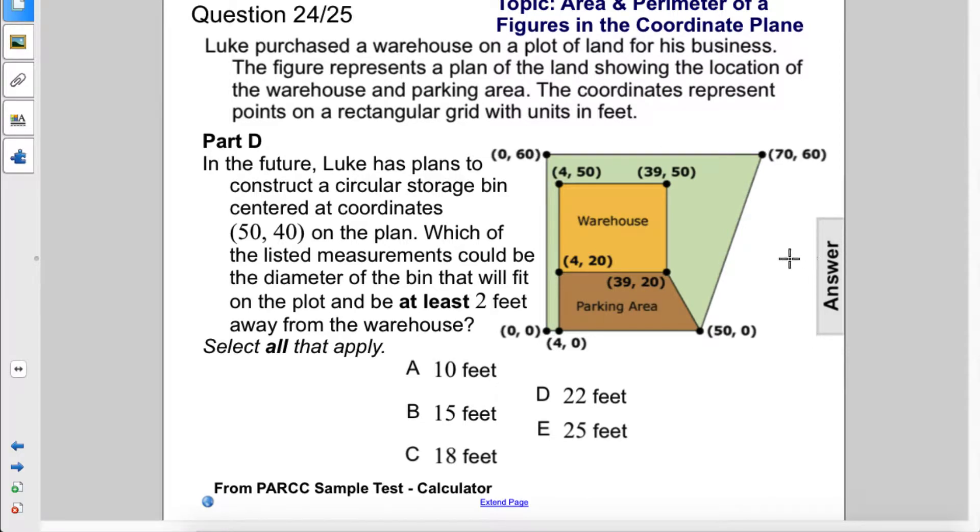In the future, Luke has plans to construct a circular storage bin centered at coordinates (50, 40) on the plan. Which of the listed measurements could be the diameter of the bin that will fit on the plot and be at least two feet away from the warehouse?